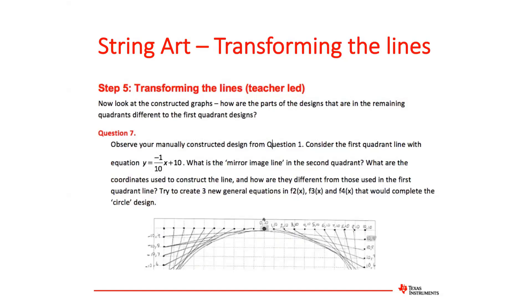So in a sense, what you're doing is you're changing the sign of the X coordinate. And that can be reflected in the construction of the rule that you would need for F2, the second quadrant set of lines, F3, the third quadrant set of lines, and F4, the fourth quadrant.